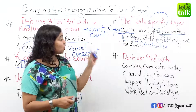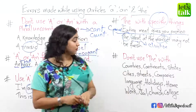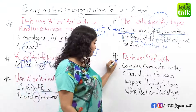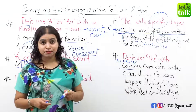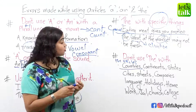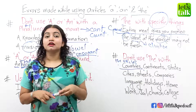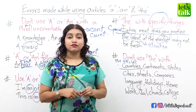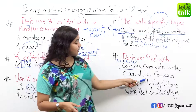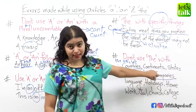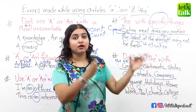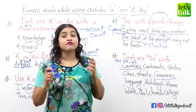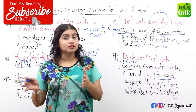Rule number five says you are not going to use the with a lot of things like countries. You can't say "I am from the India." You have exceptions — you can say "I am from the UK" or "the US" or "the Philippines" — but in general you don't use the with countries. You do not use the with continents — you live in Asia, not the Asia. States also do not have the — you live in California, not the California. The same applies to cities, streets, and companies. You also don't say "I speak the English" — you speak English, French, or Spanish, not the Spanish.